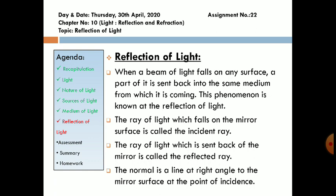Now, reflection of light. When a beam of light falls on a surface, a part of it is sent back into the same medium from which it is coming. This phenomenon is known as reflection of light. That is, the bouncing back of light in the same medium.